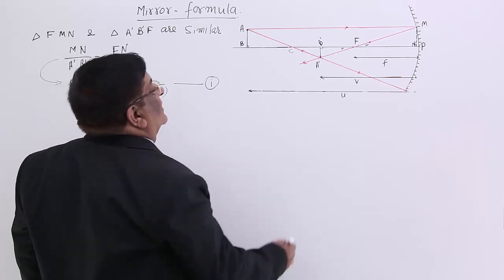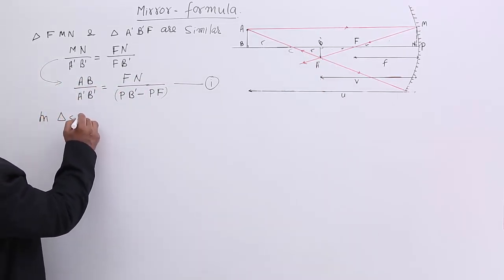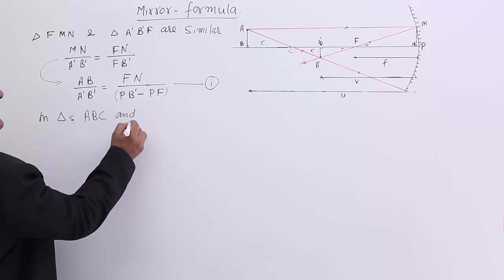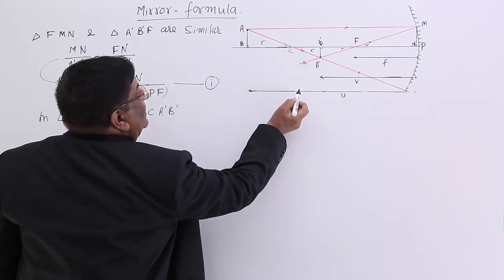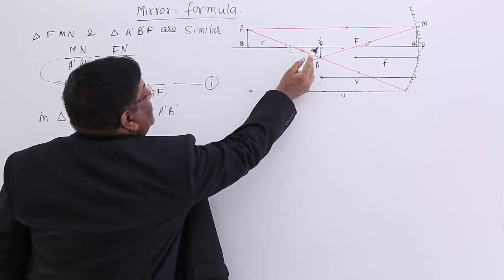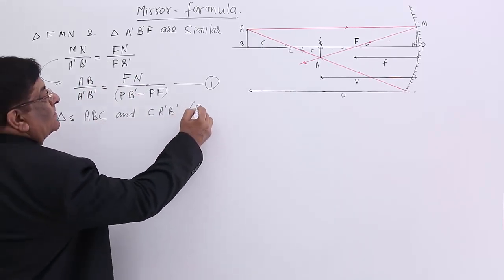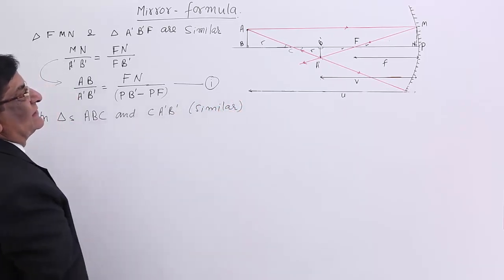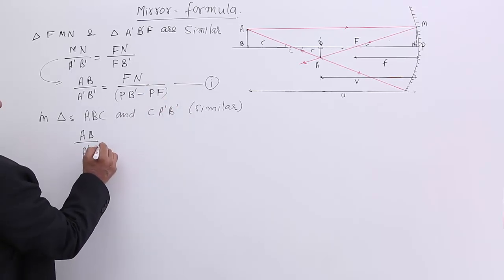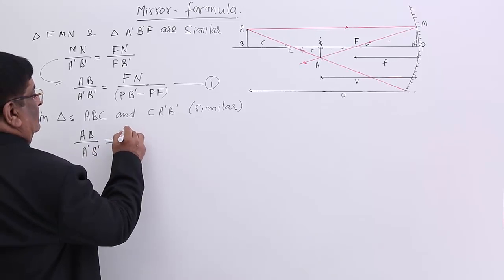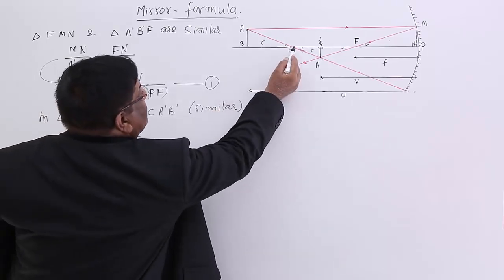Now I take two other triangles. In triangles ABC and CA'B': these two angles — opposite angles — are equal, and AB and A'B' are normal, therefore the third angle will be equal. So these two are similar triangles. If these are similar triangles, then again we write the ratio: AB upon A'B' is equal to BC upon B'C.